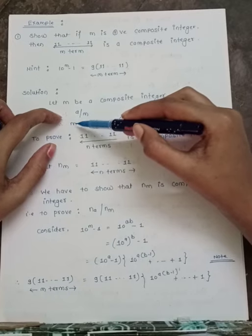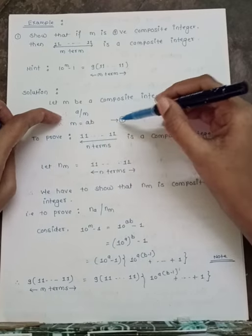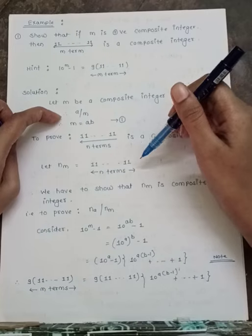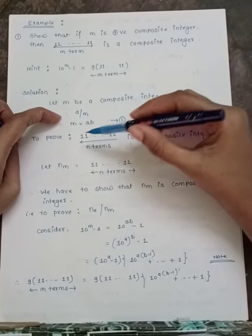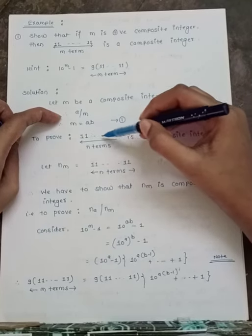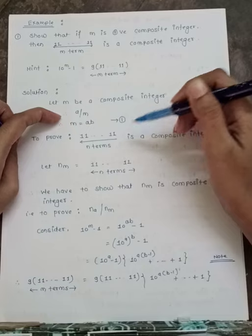Show that if m is a positive composite integer, then the repunit number consisting of 11…1 with m terms is also a composite integer. Let m = ab — equation 1. We need to prove that the m-term repunit nm is composite.